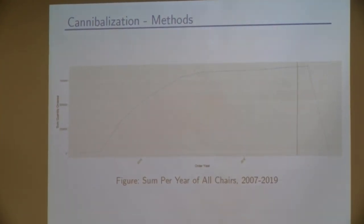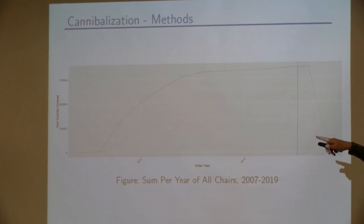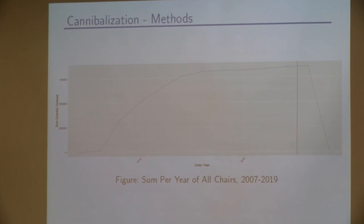So we decided to sum the chairs per year to get a better graph. So this graph represents all five chairs of interest, the ordered quantity summed per year. So as you see, there is an increase and then it starts to plateau. So again, this vertical black line, that's the introduction of the newest chair. So we see this steep drop-off right here, and that's the 2019 data, so you only see two months of it.